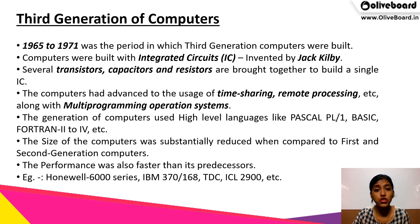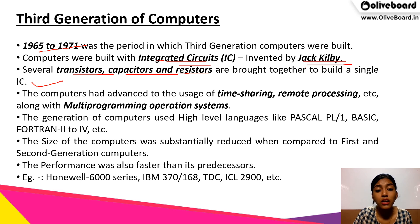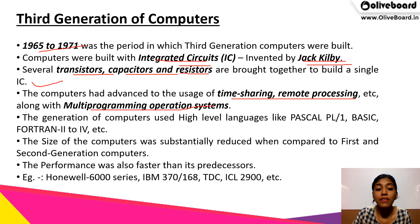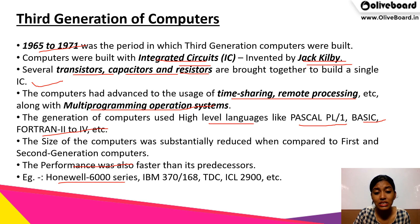The third generation of computers ranged from 1965 to 1971. These computers were built with integrated circuits, which were invented by Jack Kilby. Several transistors, capacitors and resistors were brought together to build a single integrated circuit. The computers advanced to the usage of time sharing and remote processing, along with multi-programming operating systems. High-level languages like Pascal, PL/1, Basic, and Fortran 2 to Fortran 4 were used. The size reduced compared to earlier generations but they were still very big. Examples are Honeywell 6000 series, IBM 370/168, TDC, and ICL 2900.